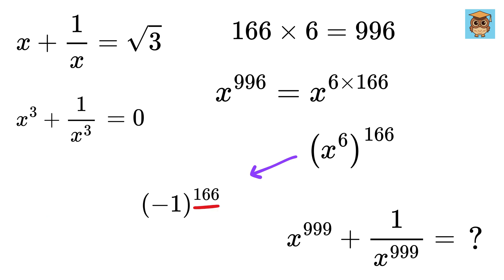Now, this is an even power, and we know that minus 1 raised to the even power equals 1. Thus, x to the 996 equals 1.